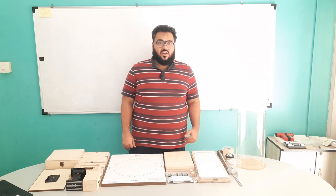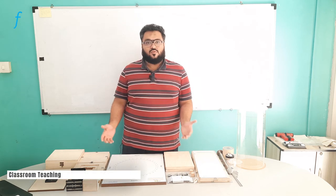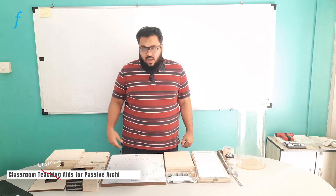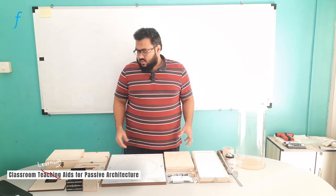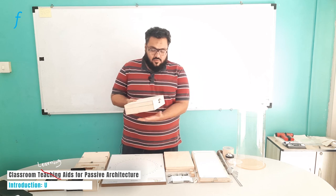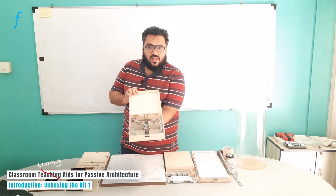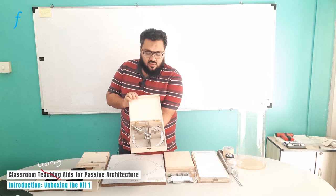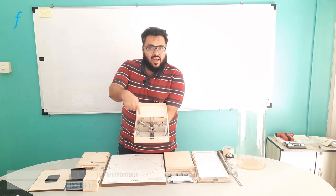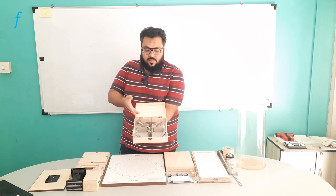Today we are introducing parts of Kit 1, which consists of solar geometry and ventilation. The first equipment we are going to look at is called the Sun Path Tracer. It has to be assembled — its assembly we will see later in the experiment.